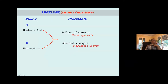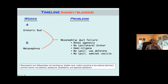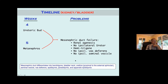Regarding mesonephric duct failure: if there is no mesonephric duct, that's obviously going to lead to renal agenesis. There's going to be no ipsilateral ureter because there's going to be no ureteric bud. You're going to have a hemi-trigone, because the mesonephric duct is important in the development of the bladder trigone. And since the mesonephric duct becomes the vas deferens and the seminal vesicles, those are not going to develop correctly either.